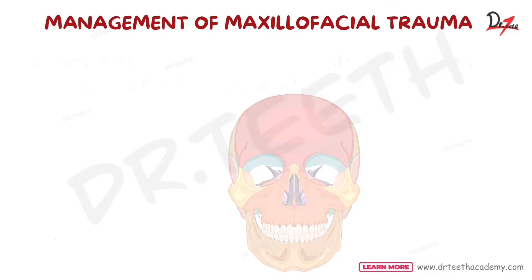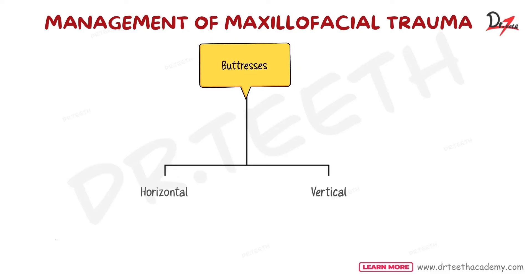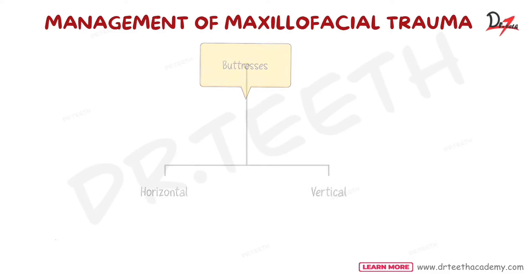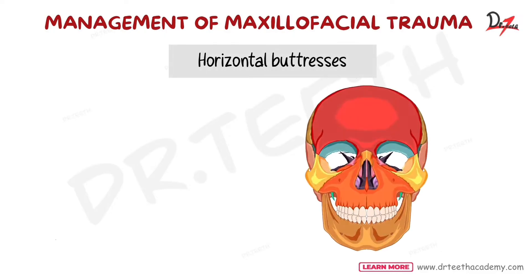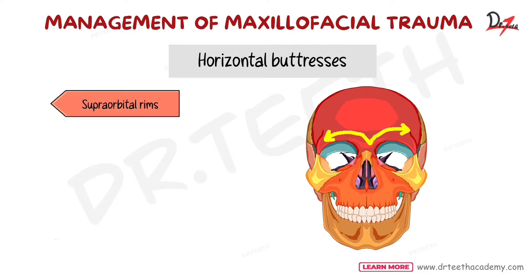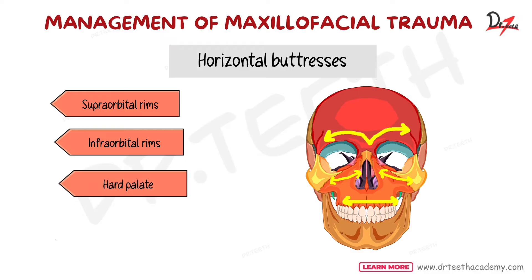There are two main types of buttresses: horizontal buttress and vertical buttress. It can be a short note question or a viva question, so listen carefully. The horizontal buttresses are the supraorbital rims (that is the frontal region), the infraorbital rims, the hard palate, and the horizontal mandible.